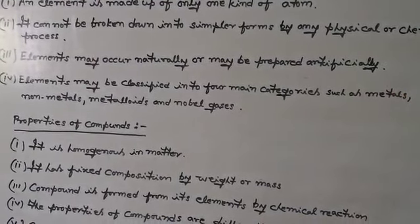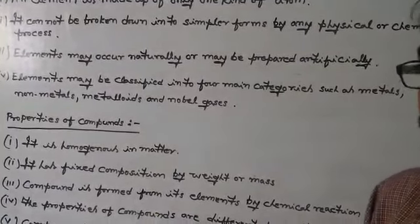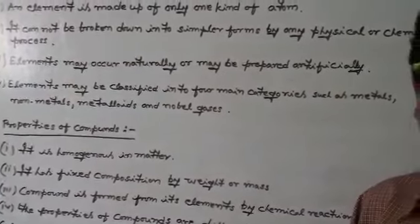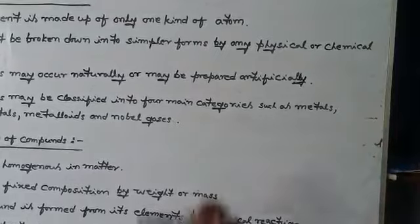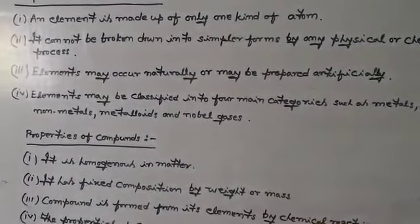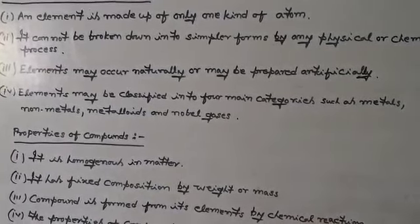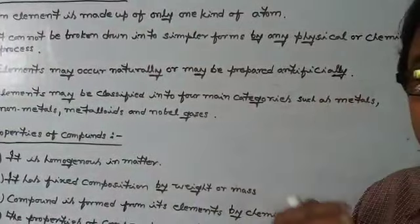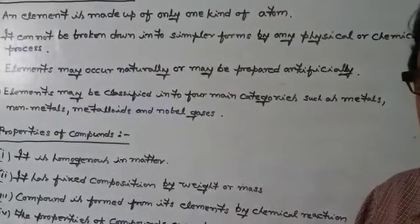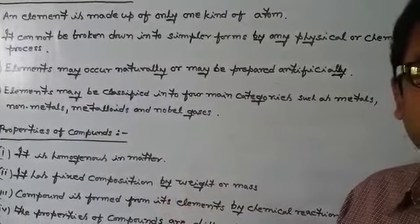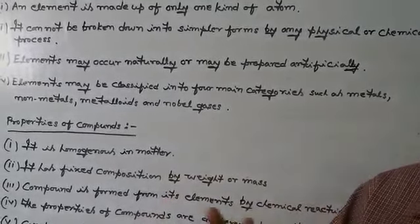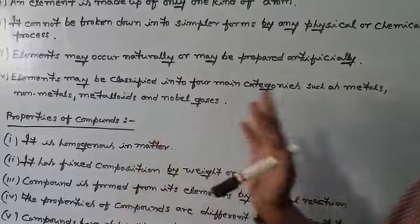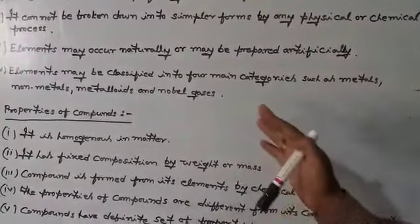Metalloids are the group of elements which show some characters of metals and some characters of non-metals too. The fourth one, that is noble gases. Noble gases are the kinds of non-metallic elements which are inactive in nature. That means they never take part in chemical reactions. That means they are already stable in nature, no need to take part in chemical reactions. So they are called noble gas elements or rare gaseous elements.